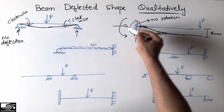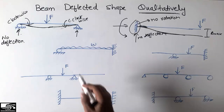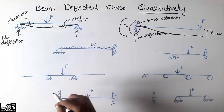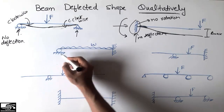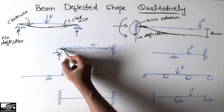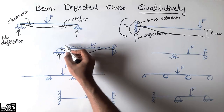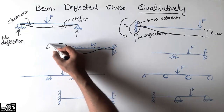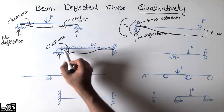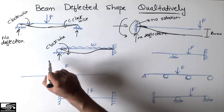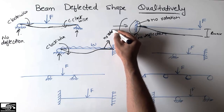The third type of beam has a roller support at one end and a fixed support at the other end, loaded by a uniformly distributed load. There will be no deflection at the fixed support end due to vertical resistance. The beam will deflect and there will be no rotation at the fixed support. At the roller end, the beam will rotate in the clockwise direction because the roller support does not resist moment. At the fixed support, there is no rotation and no deflection.